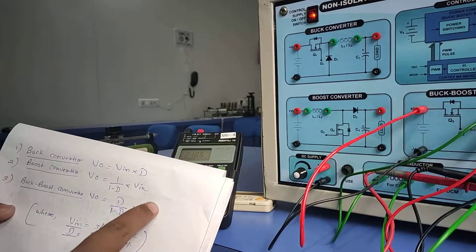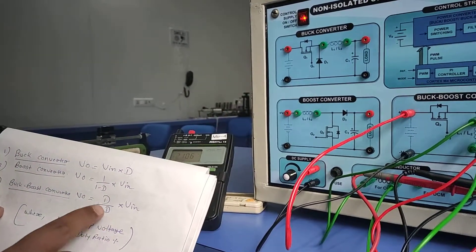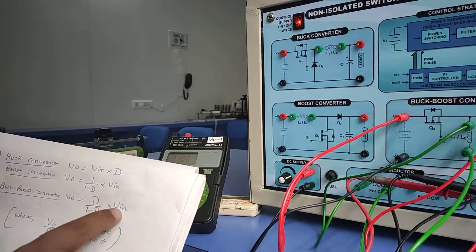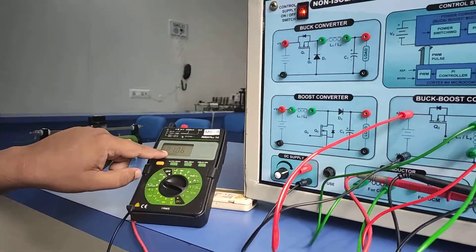In this case, V_in is fixed at 20 volts as previously mentioned. Our duty ratio is 50 percent, so the output voltage will be the same as the input voltage. You can see 20 to 21 volts here, same as the input side.